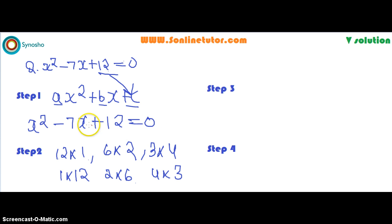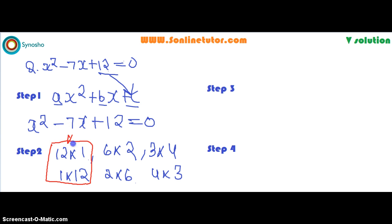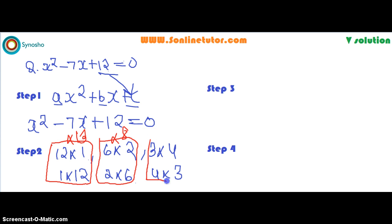We have to choose the factor pair which gives a sum of minus 7. Checking 12 and 1: does 12 plus 1 give minus 7? No. Does 6 plus 2 or 2 plus 6 give minus 7? No — those give 8 or 13. But 4 multiplied with 3: if you add both factors it gives 7. So we can choose this pair. Taking both as negative, minus 4 and minus 3 give the sum of minus 7.